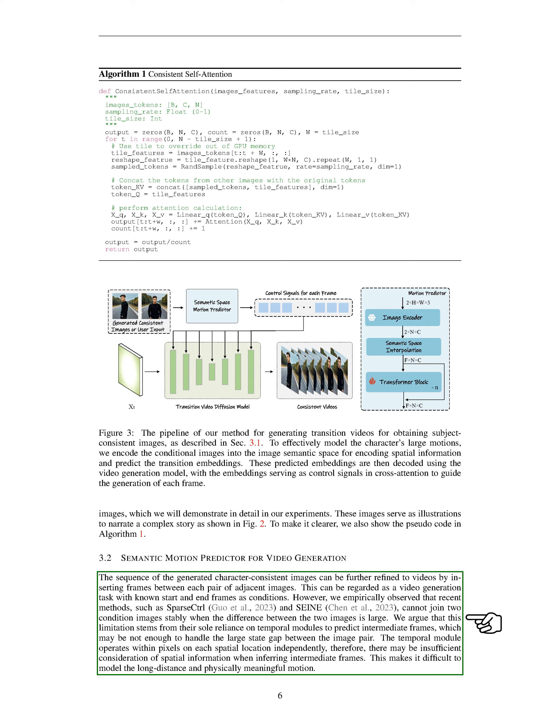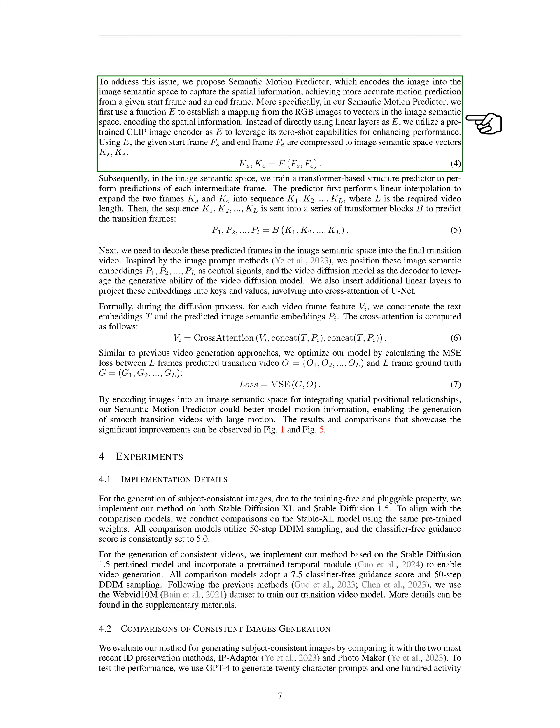To overcome this challenge, we introduce the Semantic Motion Predictor. This predictor encodes images into a semantic space to capture spatial information, resulting in more precise motion prediction between a given start and end frame. In our Semantic Motion Predictor, we use a function E to map RGB images to vectors in the image semantic space, capturing spatial details. Instead of using linear layers for E, we employ a pre-trained CLIP image encoder to benefit from its zero-shot capabilities and enhance performance.